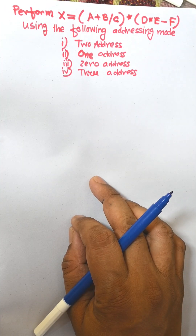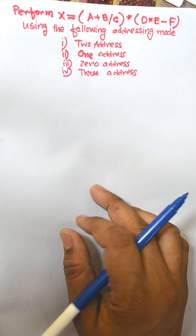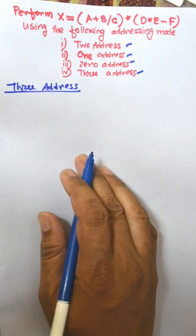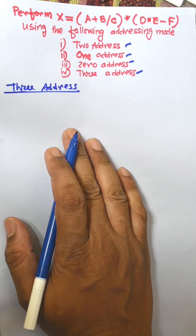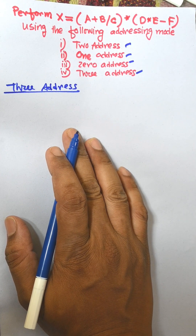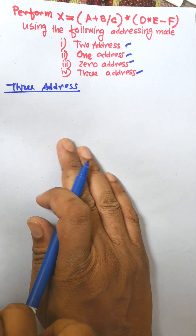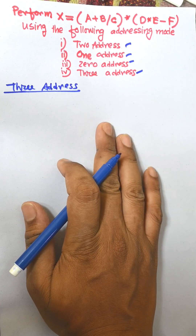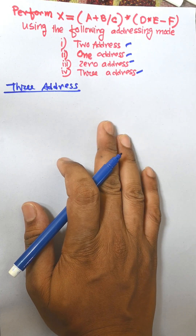In this video I am going to convert the following expression into three-address and two-address format. There are three operands: operand one, operand two, and the result.